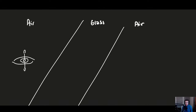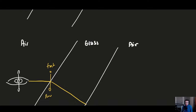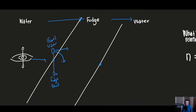Translating this to light going from air into glass: we'd have our fast side and slow side. When the fast side keeps going and the slow side lags, we bend toward the slow side. Once the whole beam is inside the new medium, both sides are going the exact same speed — so we go straight again. That's why we're straight when fully inside the medium — neither side is faster or slower.